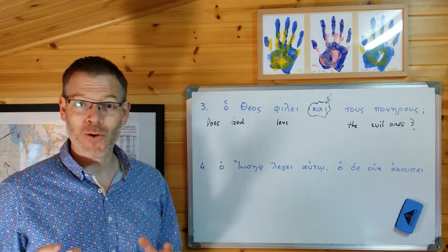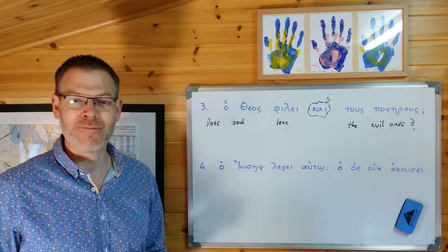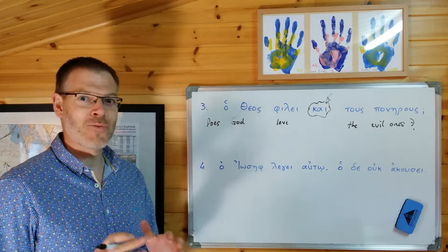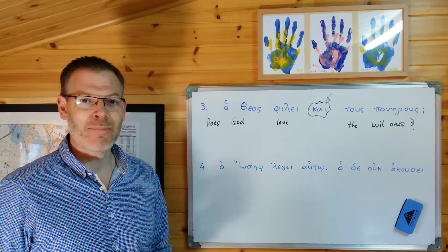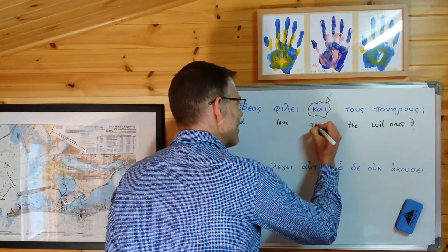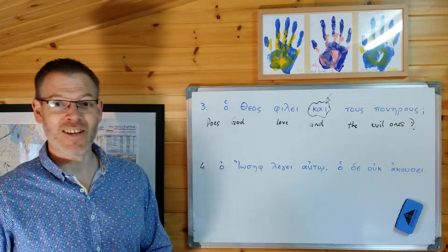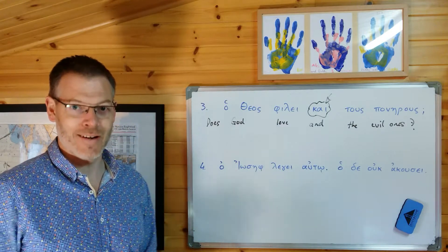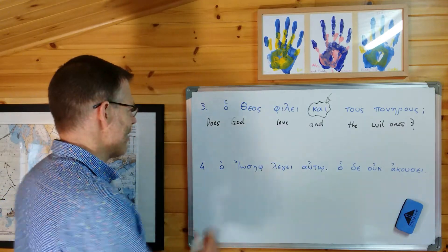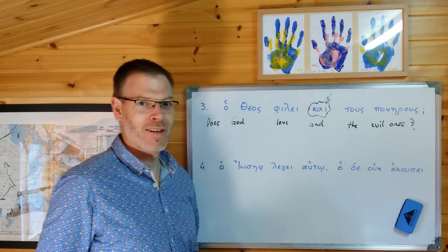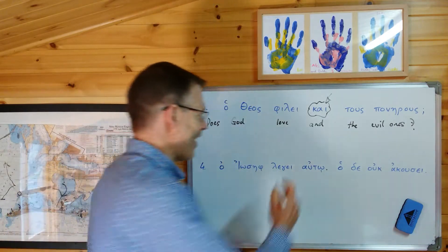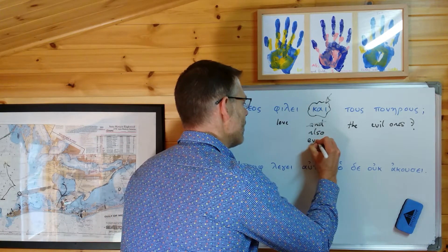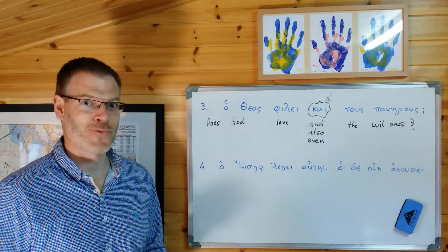God loves the evil ones? Does God love the evil ones? And then let's deal with this little word, kai. You know what kai means - kai normally means 'and.' However, it doesn't always mean 'and.' Sometimes it can mean 'also' or 'even.' The way to work out which it is is simply to try translating it as 'and,' and if it doesn't work, try translating it as 'also' or 'even.' Let's see how that works out in this sentence.